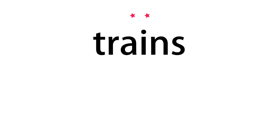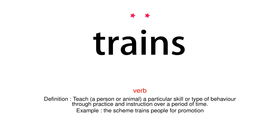Trains. Verb. Definition: Teach a person or animal a particular skill or type of behavior through practice and instruction over a period of time. Example: The scheme trains people for promotion.